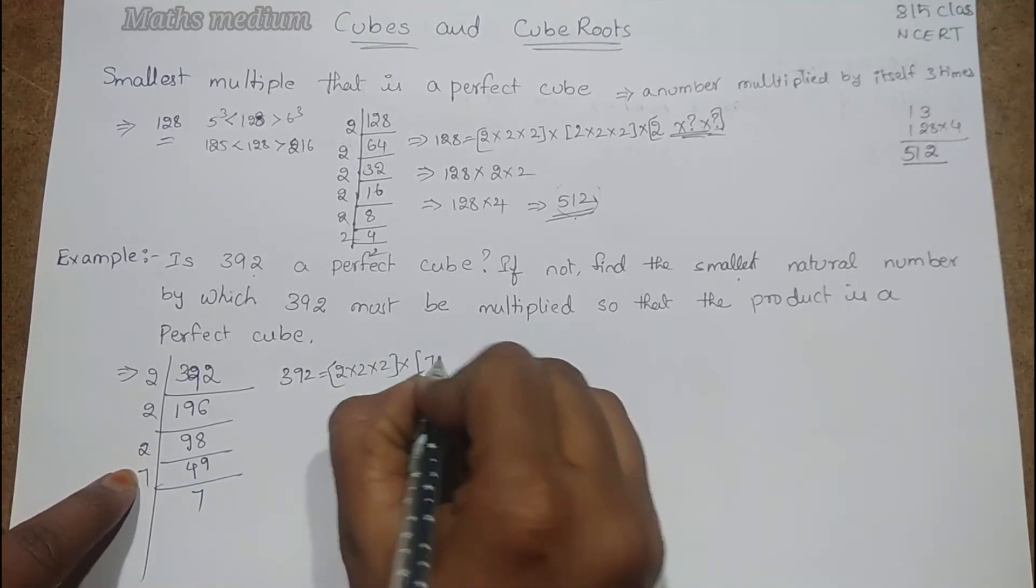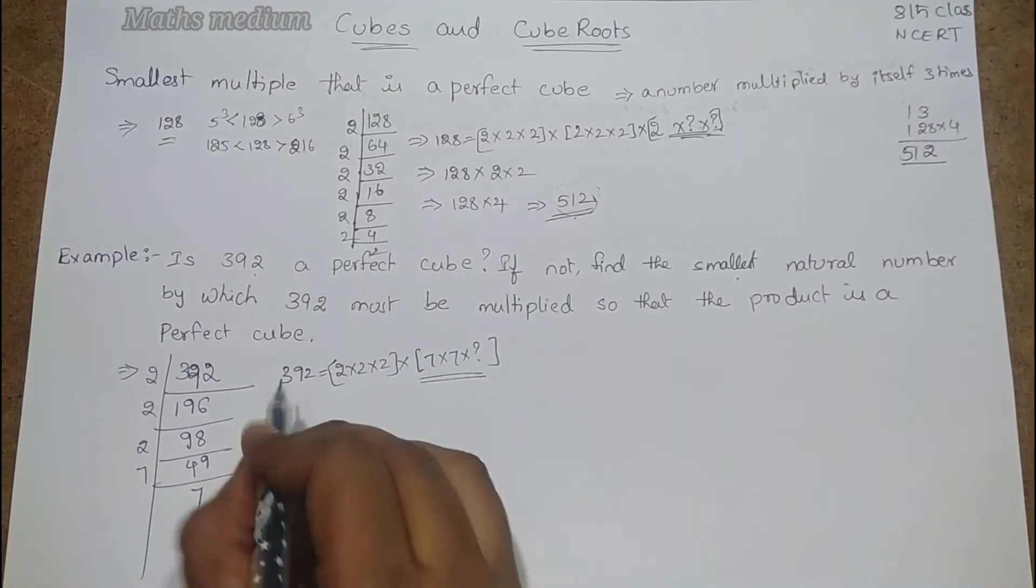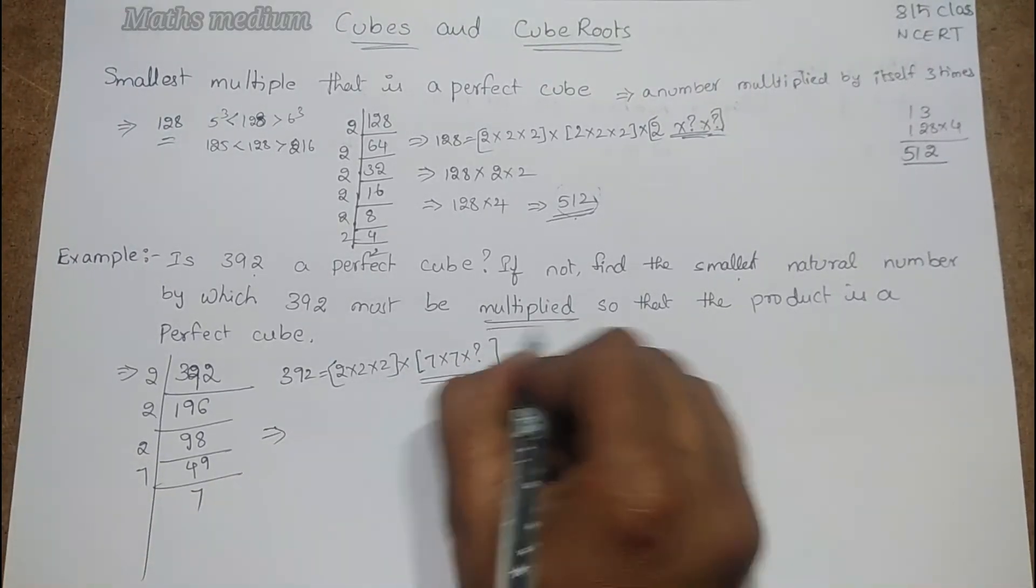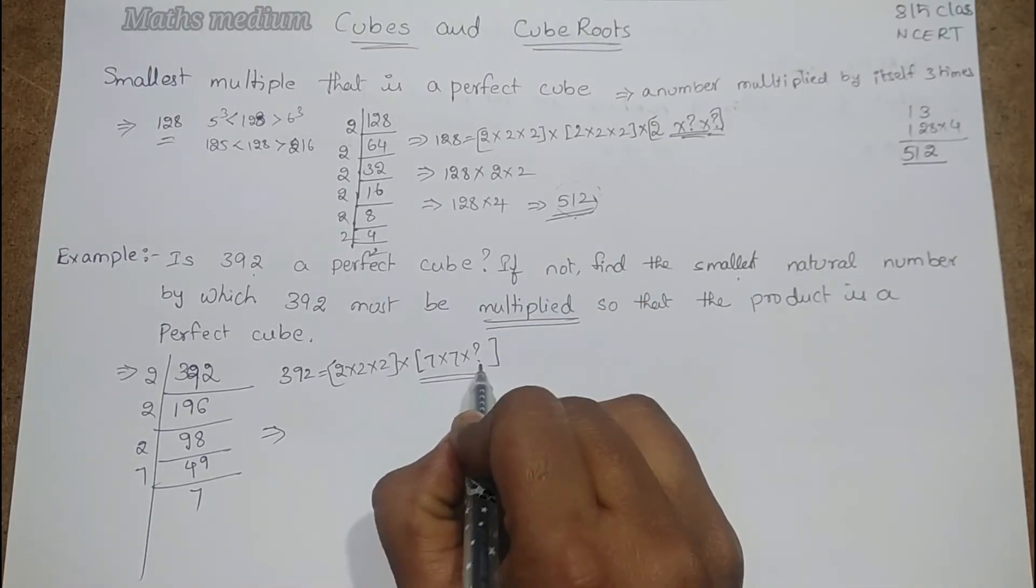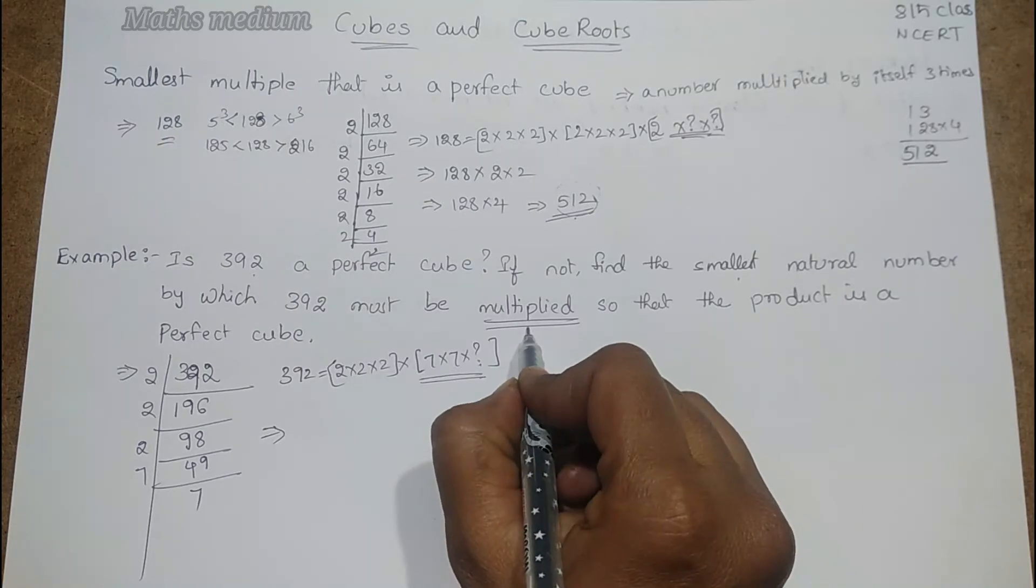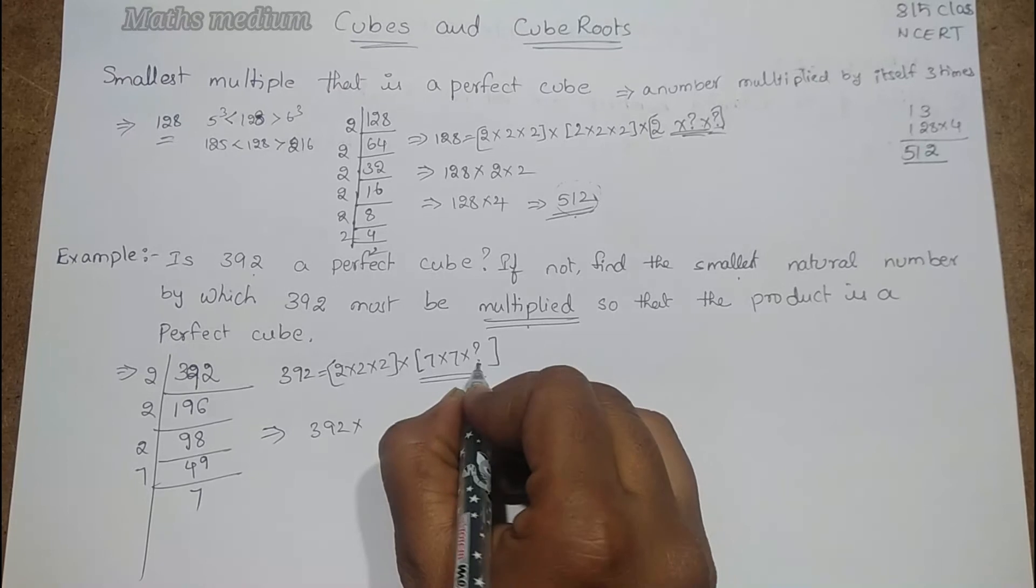But here there is no perfect cube. We have to multiply. Here they're asking about the multiplied number. So how many 7's are missing? Only one 7. So multiply with 7.